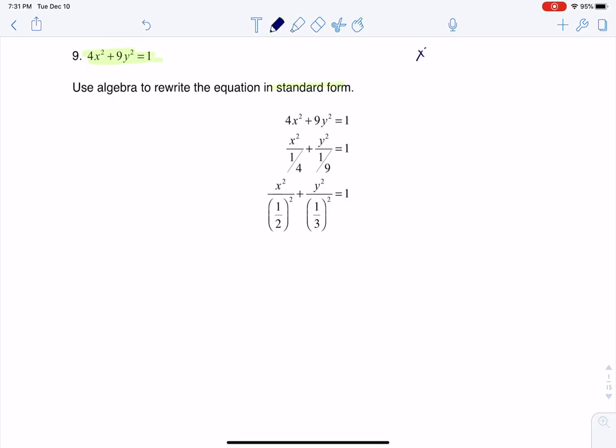When you hear standard form, that would be x squared over a squared plus y squared over b squared equaling 1, or you might say x squared over b squared plus y squared over a squared equaling 1. We determine what is a or b, or really if the a squared term goes under the x variable or the y variable.